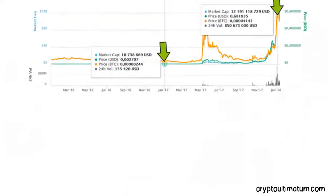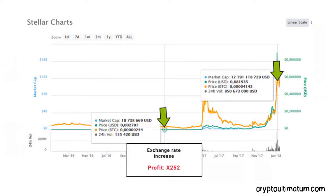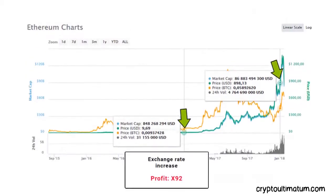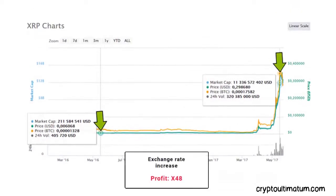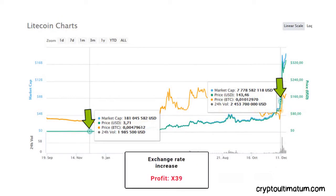Don't miss exchange rate profits like Stellar with a 252 times increase, Ethereum with a 92 times increase, XRP with a 48 times increase, and Litecoin with a 39 times increase.